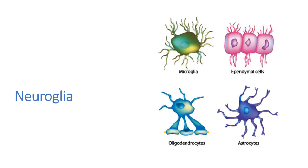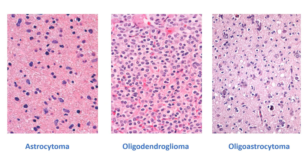We all know that neuroglia comprises of astrocytes, oligodendrocytes, ependymal cells and microglial cells. Gliomas are named based on the way the tumor cells appear under the microscope and then graded using various morphological criteria. Tumors with elongated hyperchromatic nuclei and irregular borders are called astrocytomas, while oligodendrogliomas have monomorphic cells with round regular nuclei and perinuclear halos. When the tumors have both types of cells, historically they were called oligoastrocytomas.